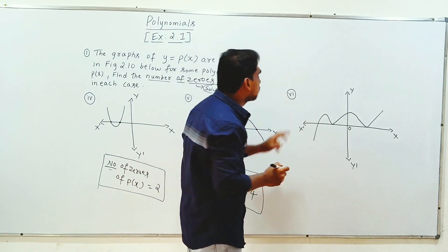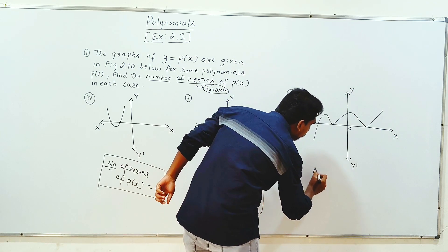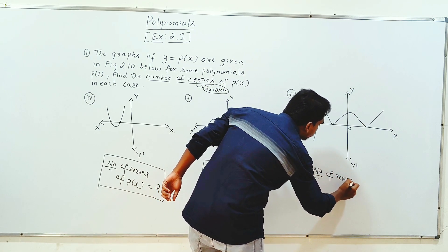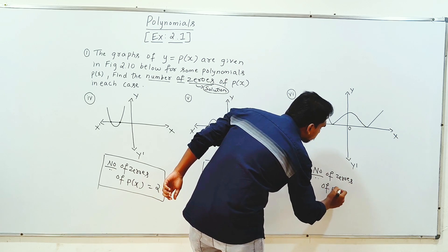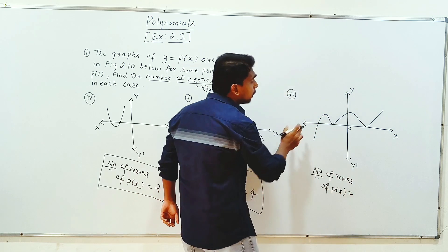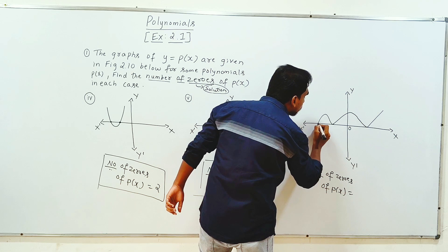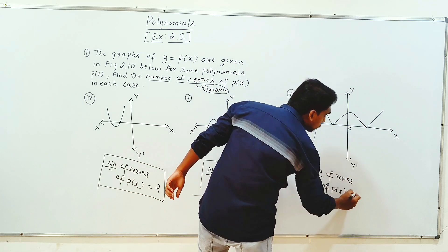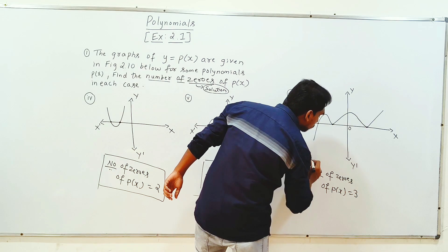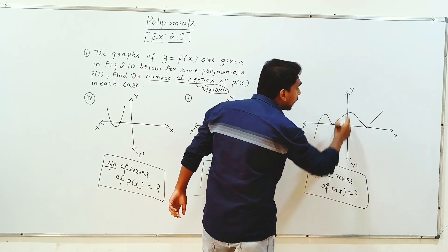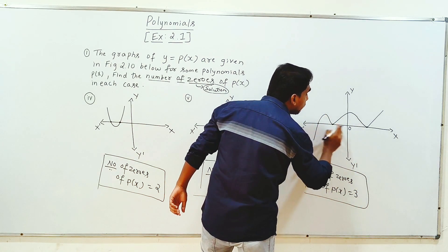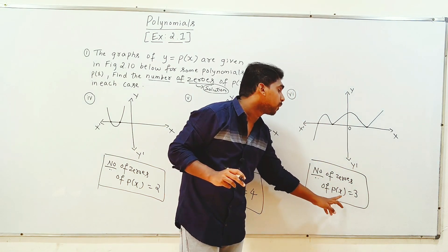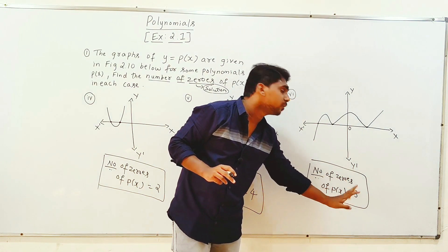Next one: 3, 4. Here is the number of zeros of p of x. One point, eight point, more point — yes, three points. So the sixth question answer is 3.